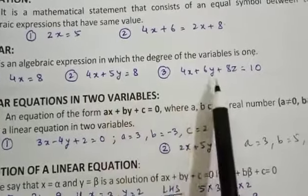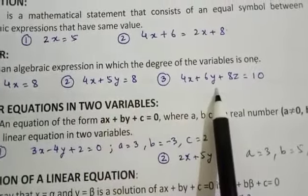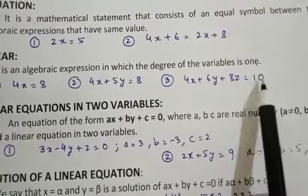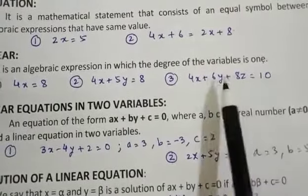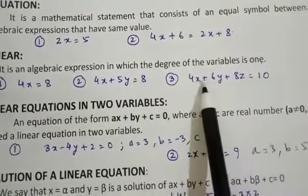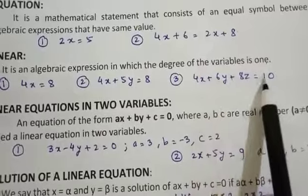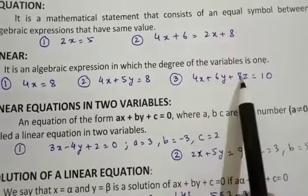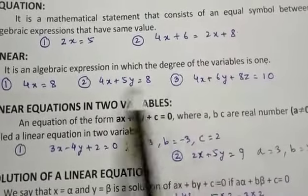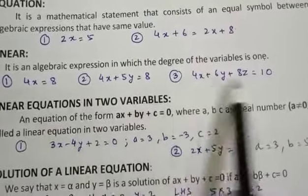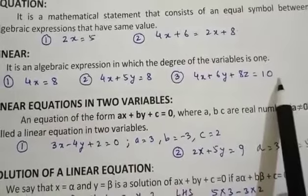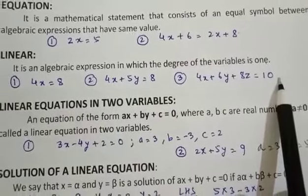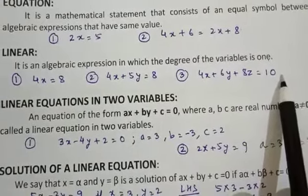The third one: 4x plus 6y plus 8z is equal to 10. We have got three variables x, y, z, all with a degree of 1. So in these three examples, each variable is having a degree of 1.